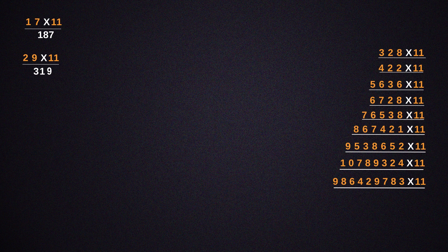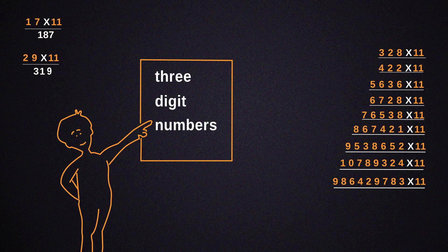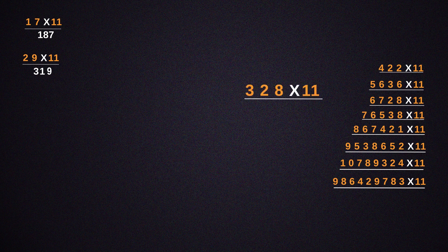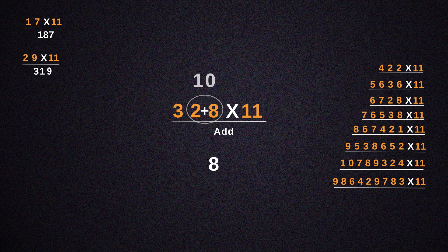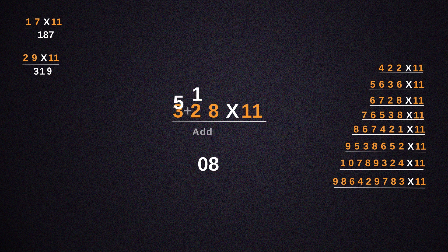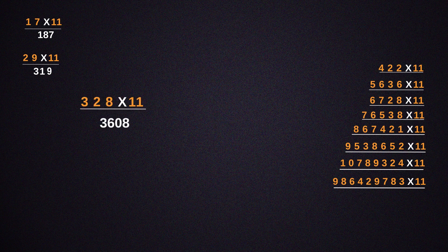Now let's take examples of 3-digit numbers. 328 into 11. Write it directly as it gets multiplied to 1. Take the sum of 2 and 8, making 10. 1 gets added to the other consecutive addition of numbers, making it 6. And then write 3 as it is, so the answer we get will be 3,608.